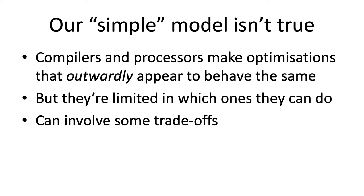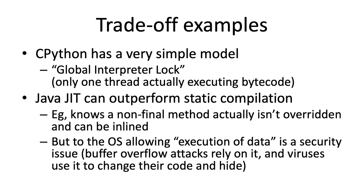Compilers and processors make optimizations that outwardly appear to behave the same, but there are trade-offs. The Java JVM has two JIT optimizers — one takes longer but is usually more efficient — so it must trade off between running code immediately and investing time in optimization first. CPython has a global interpreter lock (GIL), meaning that even if you write parallel code in Python, only one thread ever executes at once regardless of how many cores your computer has. On the other hand, Java's JIT can outperform static compilation because, at runtime, it can observe that a method hasn't been overridden in any loaded subclass and inline it as if it were marked final, even without the final keyword.